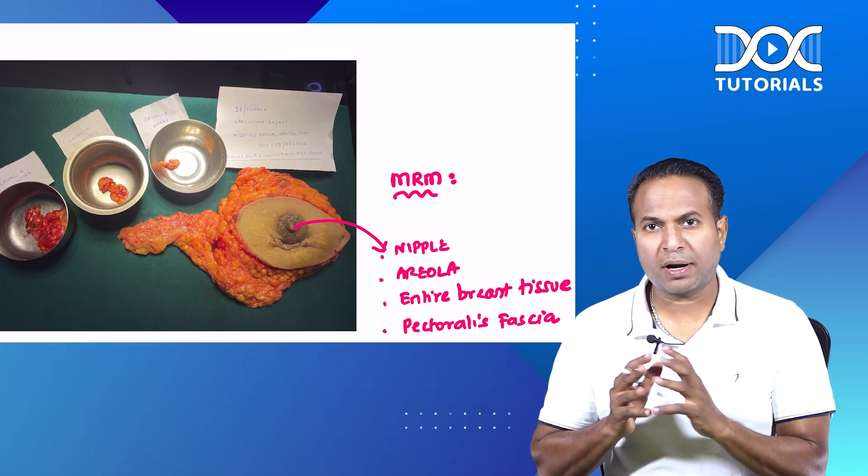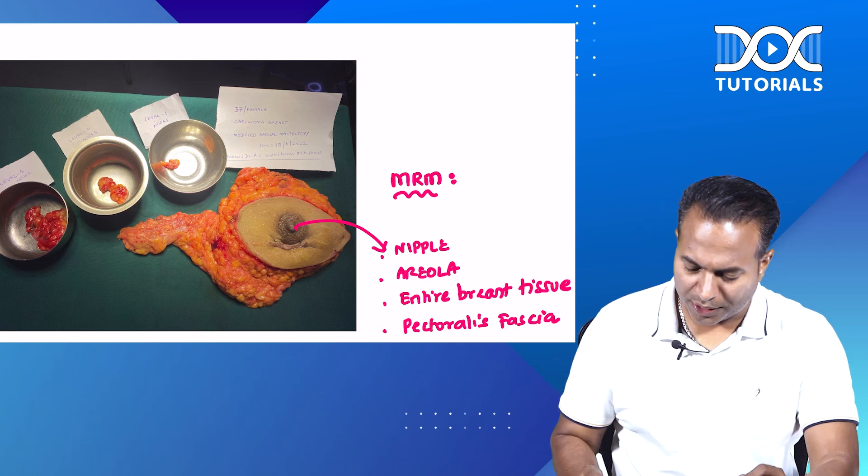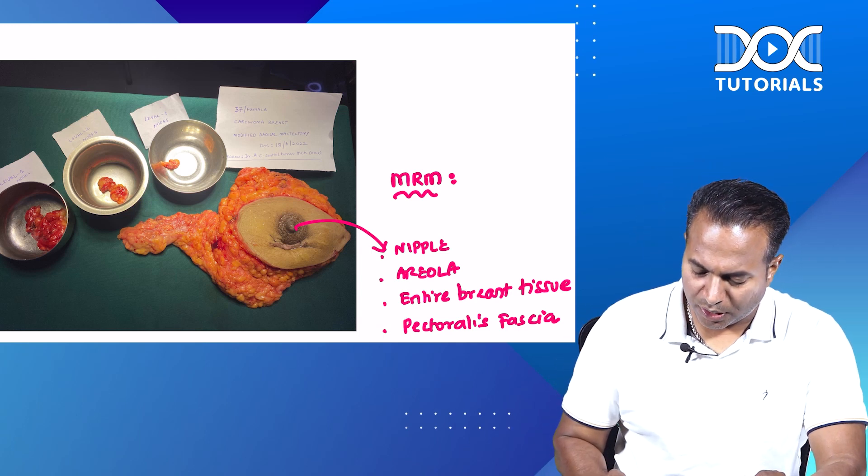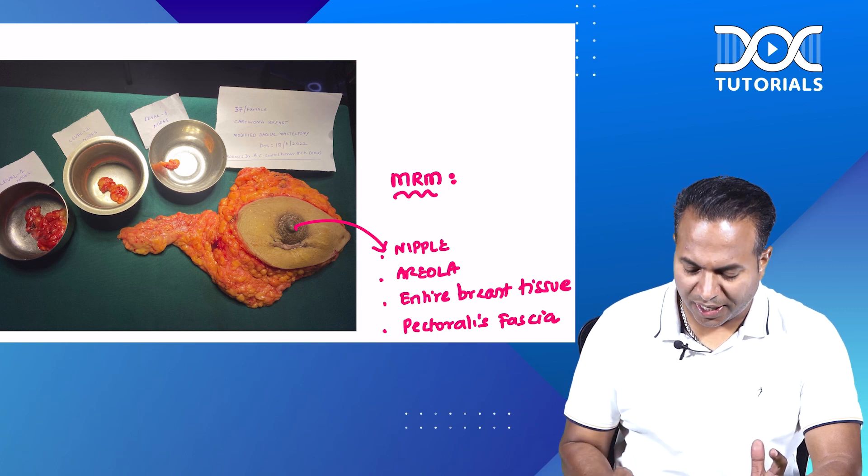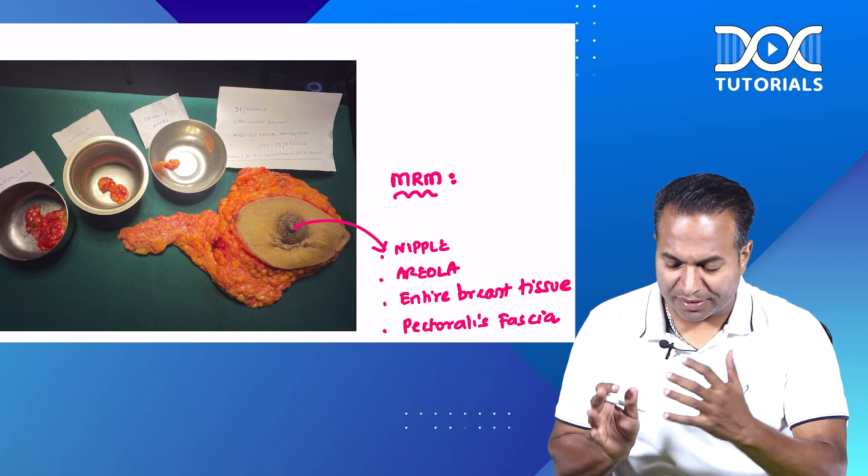So in this MRM operation, what are the structures removed? You can see from the picture: nipple, areola, entire breast tissue, along with the pectoralis fascia and the tumor inside the breast tissue. Everything is removed like this.